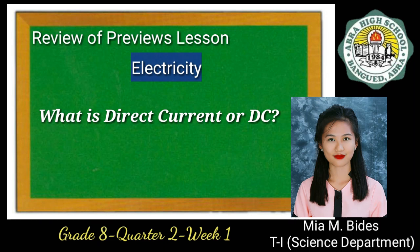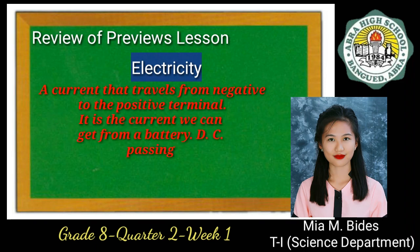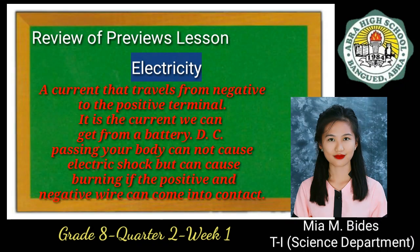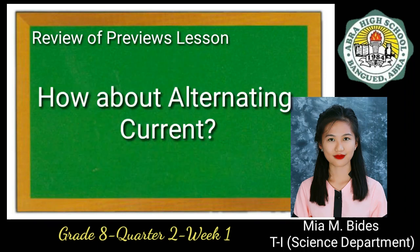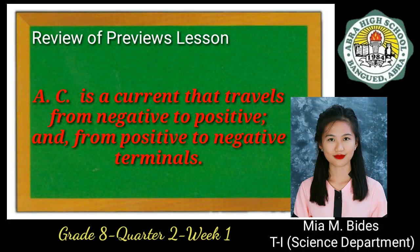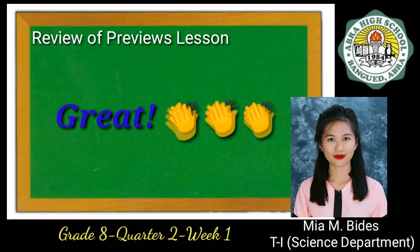Next question: what is direct current or DC? DC is a current that travels from negative to the positive terminal. It does not change its direction. It is the current we can get from a battery. DC or direct current passing through your body cannot cause electric shock, but can cause burning if the positive and negative wires come into contact. How about alternating current or AC? AC is a current that travels from negative to positive and from positive to negative terminals. Great — you are now ready for the next topic!